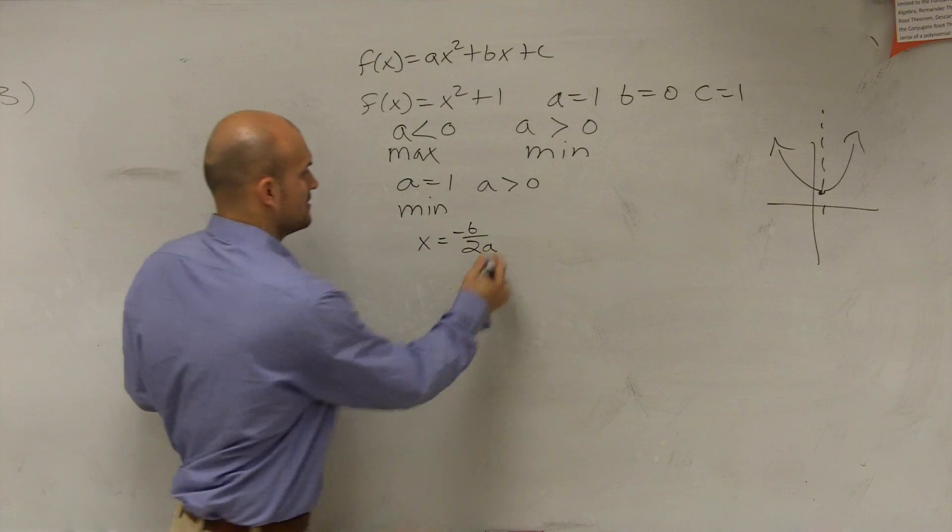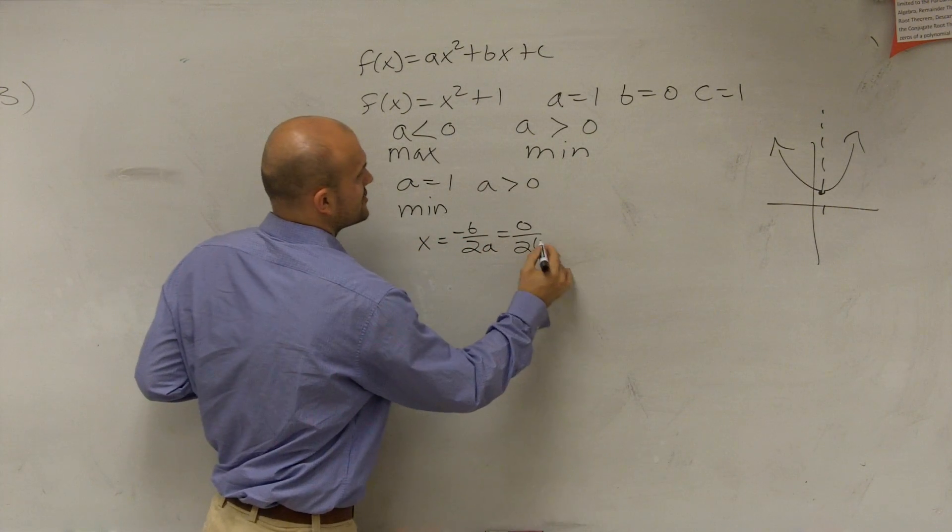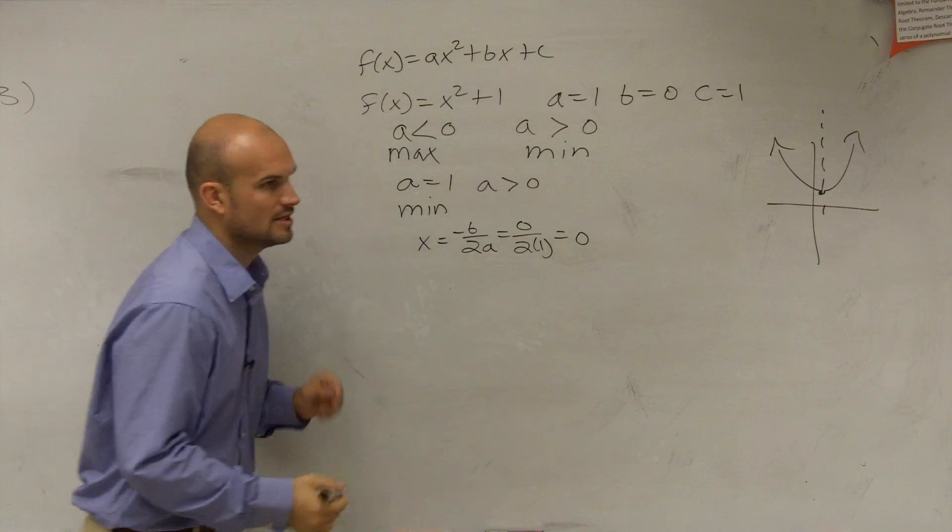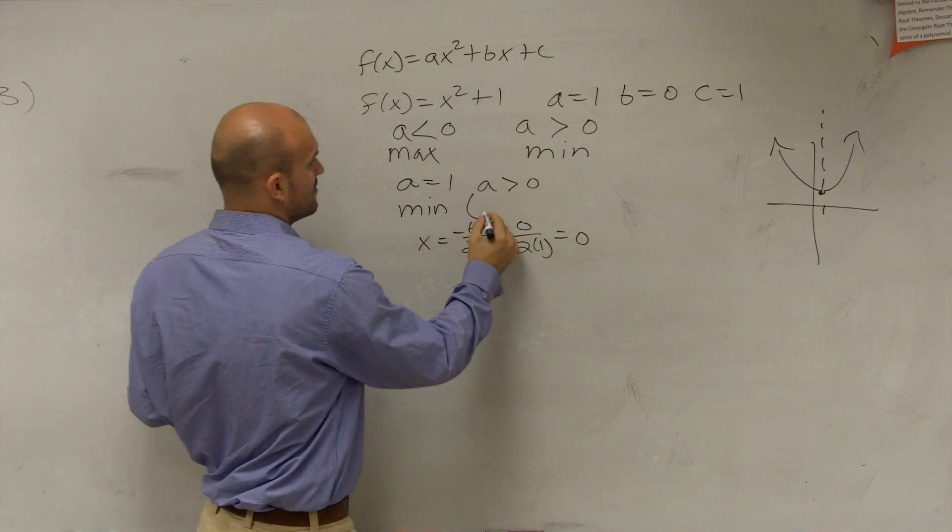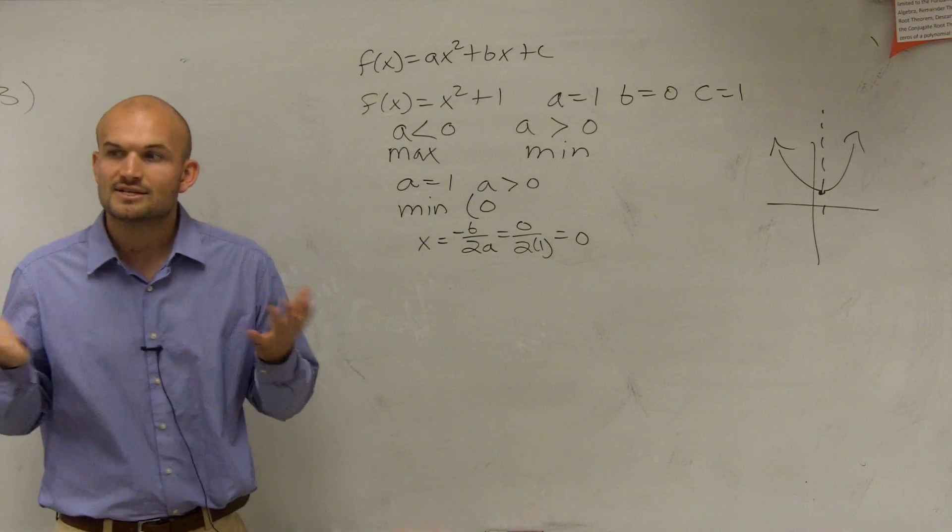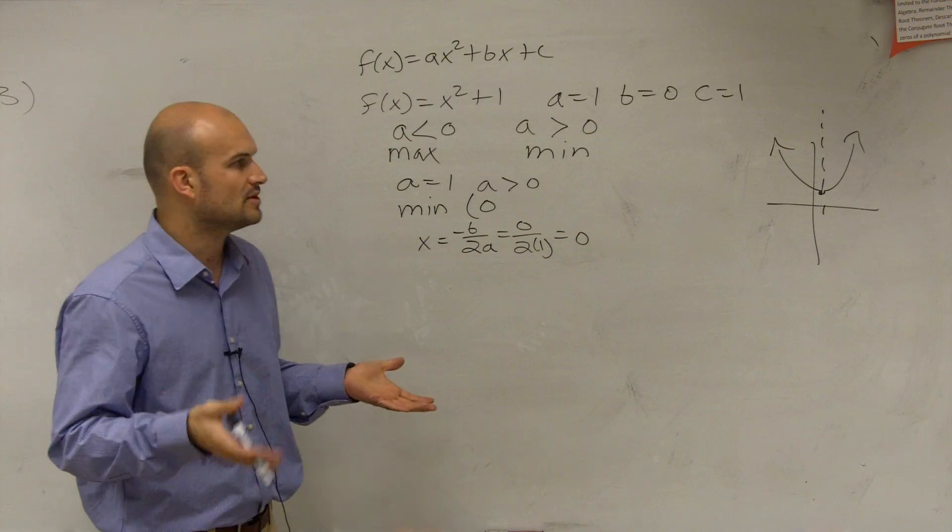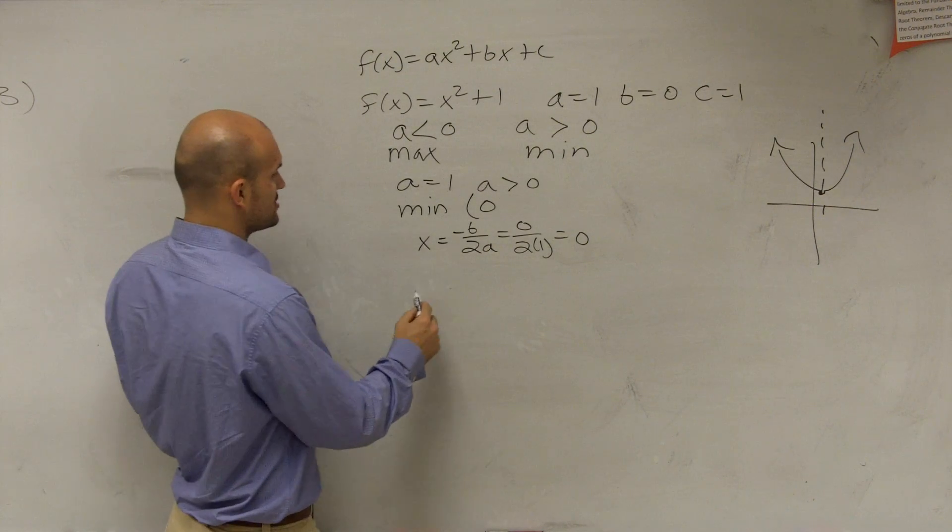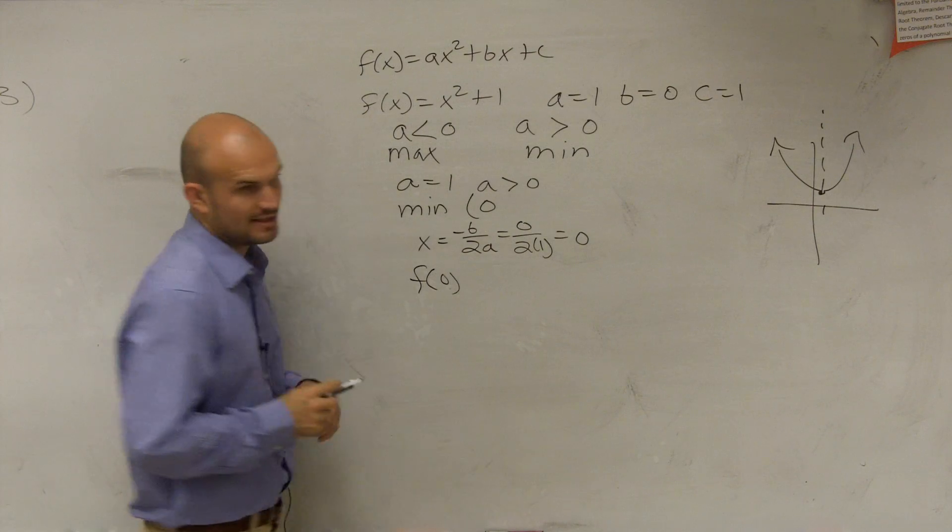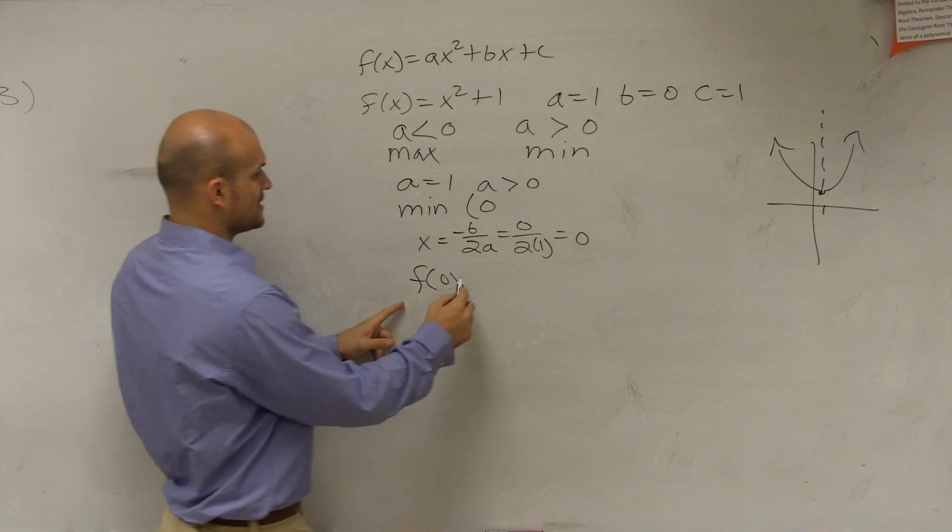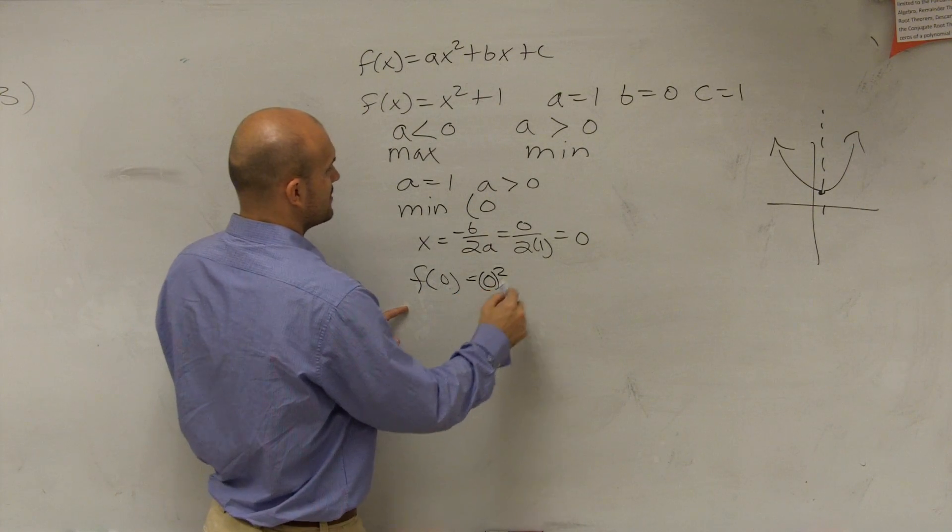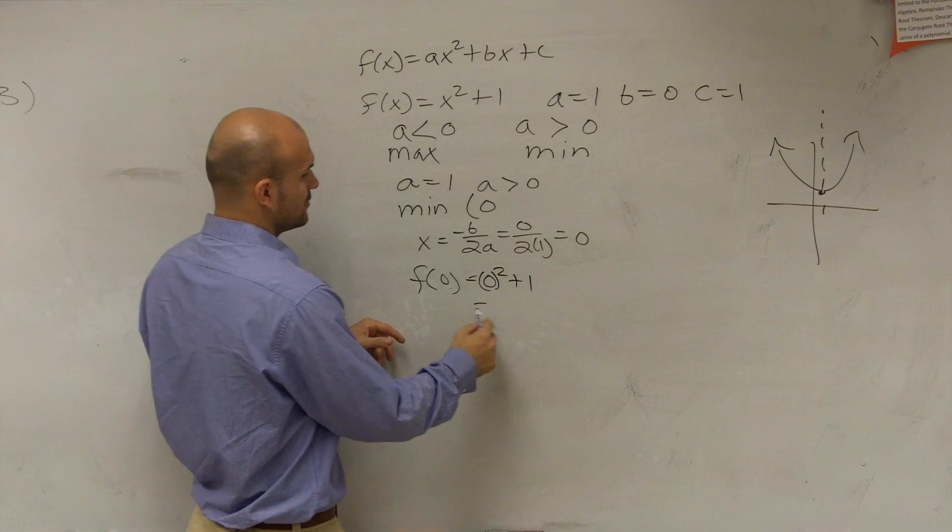Well, remember, b equals 0, right? So it's 0 divided by 2 times 1, which equals 0. So the x-coordinate of my minimum value is at 0. To find the y or the output, you just plug it in. So you plug in that value, 0, to give you 0 squared plus 1, which equals 1.